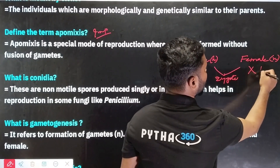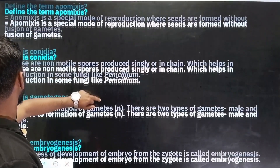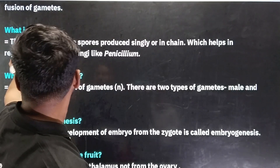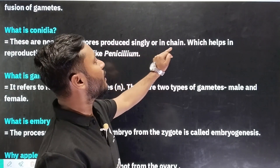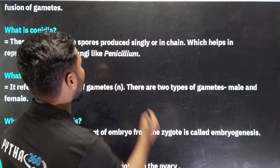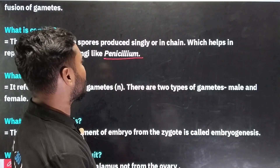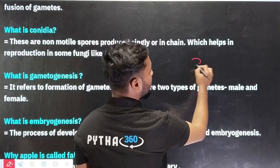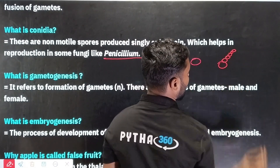What is conidia? Conidia are non-motile spores produced singly or in chains, which help in reproduction in some fungi like Penicillium. So in Penicillium, conidia are a sort of spores produced singly or in chains.